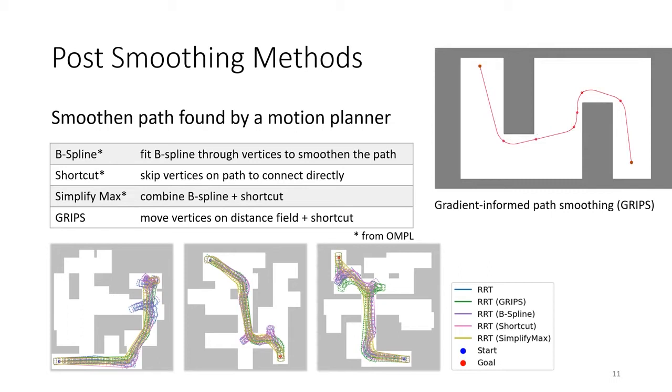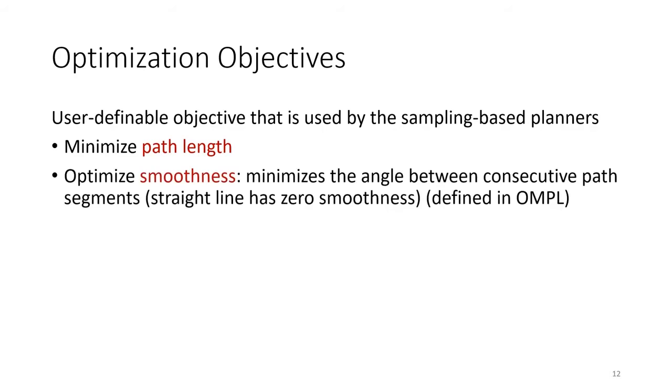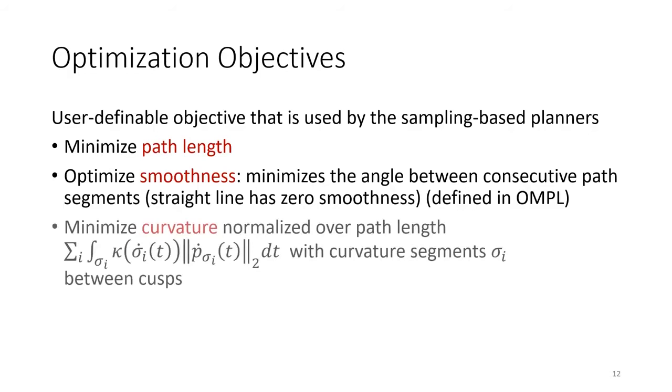By default, the motion planners try to minimize the path length while searching for a feasible solution. Optionally, the user can also select other optimization objectives, such as smoothness, where the angle between consecutive path segments is kept as small as possible. Another objective is the curvature normalized over path length, which minimizes the curvature of the path segments between path discontinuities, also known as cusps.